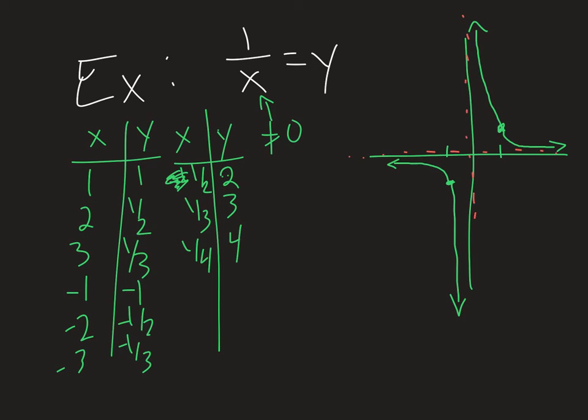They are lines that the function will never cross but they approach. So in this case, we have a horizontal one. Remember, horizontal is laying flat at y equals zero—it's never going to cross that line.